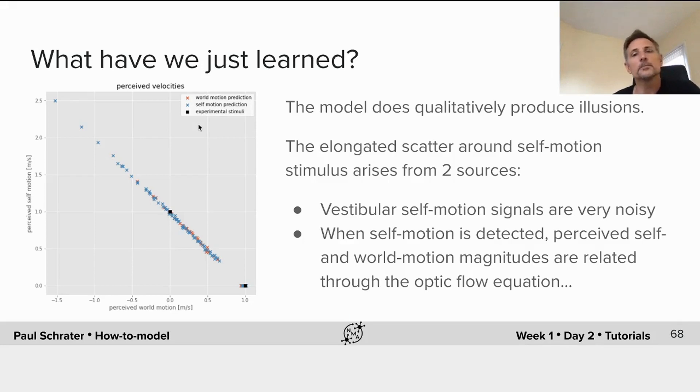We've seen that the model does qualitatively produce illusions. Here, for the perceived world motion, we have a tight cluster near the actual world motion, but there's also cases in which your self motion is occurring in your world motion. So the mix of the blue and the red is showing that our illusion occurs.